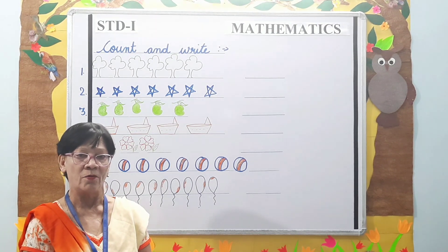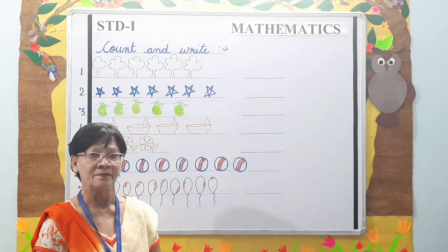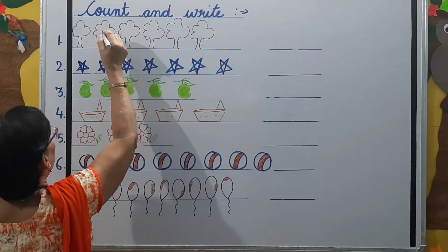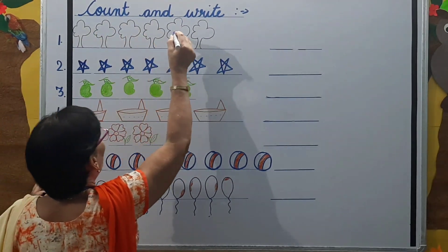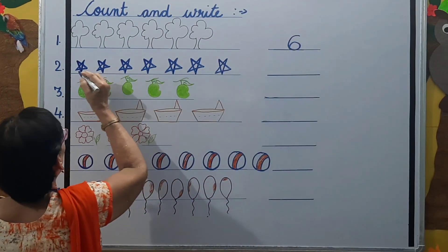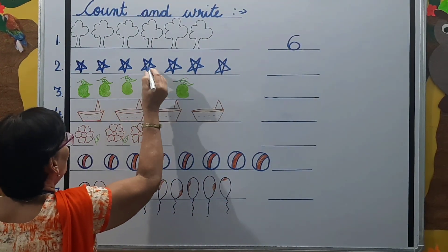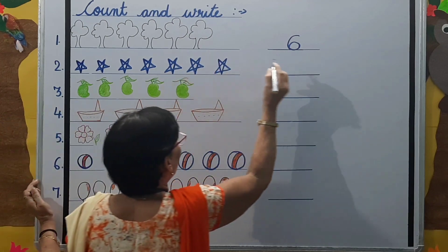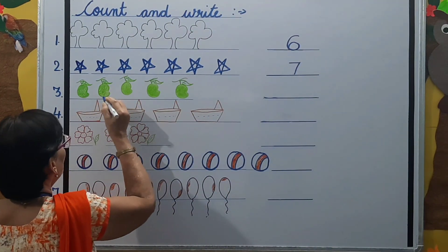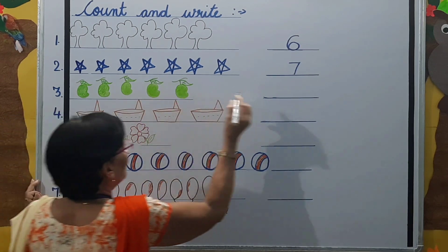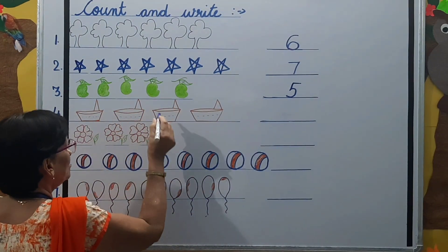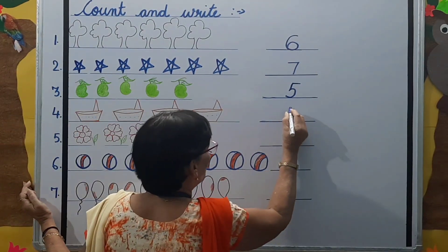You have to count the objects and write the numbers. 1, 2, 3, 4, 5, 6 — 6 trees. 1, 2, 3, 4, 5, 6, 7 — 7 stars. 1, 2, 3, 4, 5 — 5 mangoes. 1, 2, 3, 4 — 4 boats.